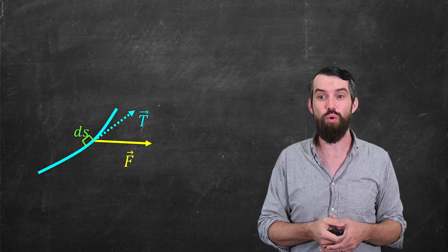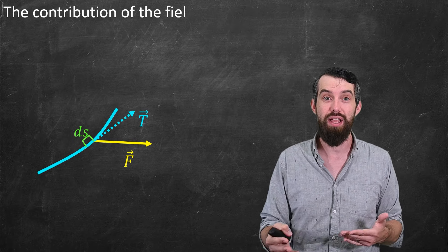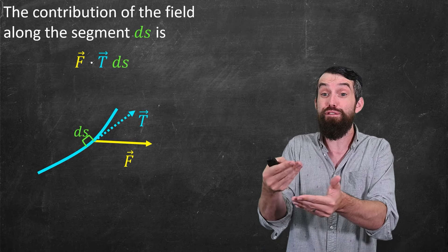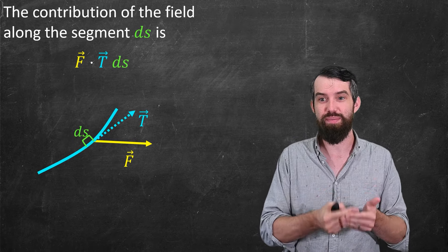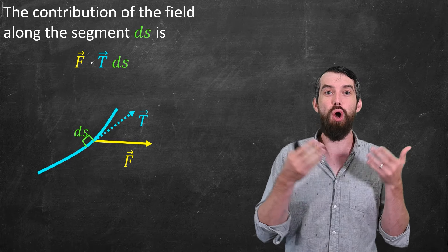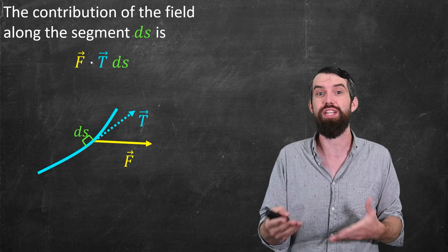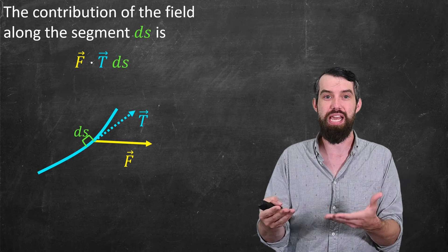And then if I'm interested in what is the work done by this little movement of length ds, I also have to ask, well, what is the tangential component? So then the contribution of the field along that little segment ds is just given by the f dot t, that's the proportion of the force in the t direction, times this little ds.